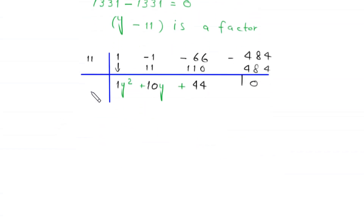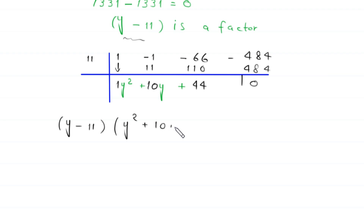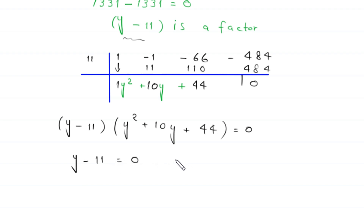So one factor is y minus 11, and the second factor is y squared plus 10y plus 44, giving us y minus 11 times y squared plus 10y plus 44 equals 0. From here, either y minus 11 equals 0, or y squared plus 10y plus 44 equals 0.